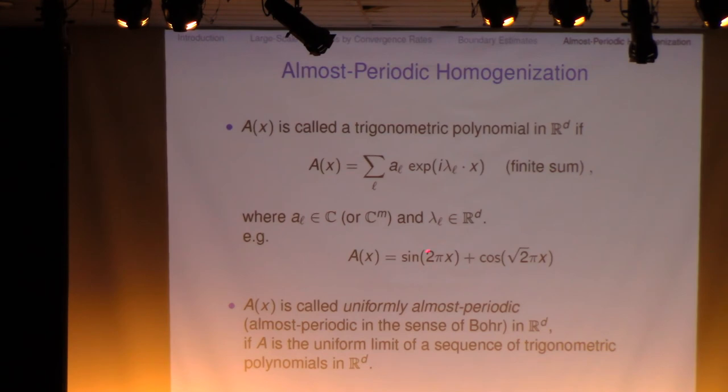So here, I give you a function which is almost periodic, but not periodic. So you have a function sine 2 pi x. That's a periodic function, period one. And this is a function with period of square root of two. And because square root of two is irrational, the sum of these two periodic functions is not a periodic function. There's no common period. But it is a trigonometric polynomial, so in particular, it's an almost periodic function.